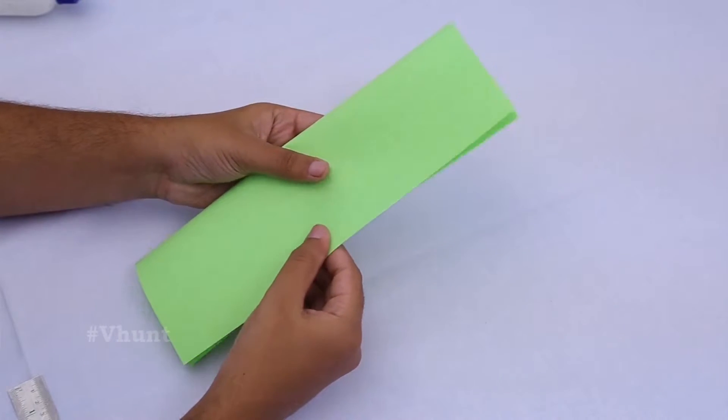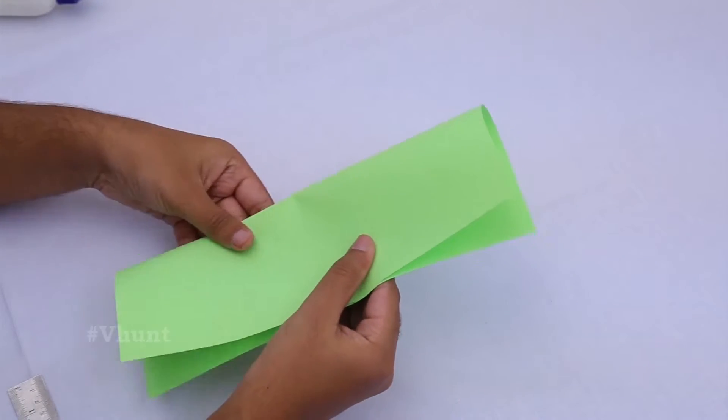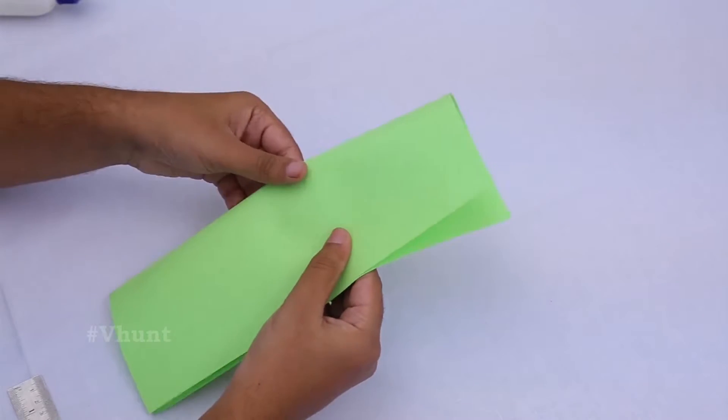First, take a colored paper and fold it in half towards both sides.